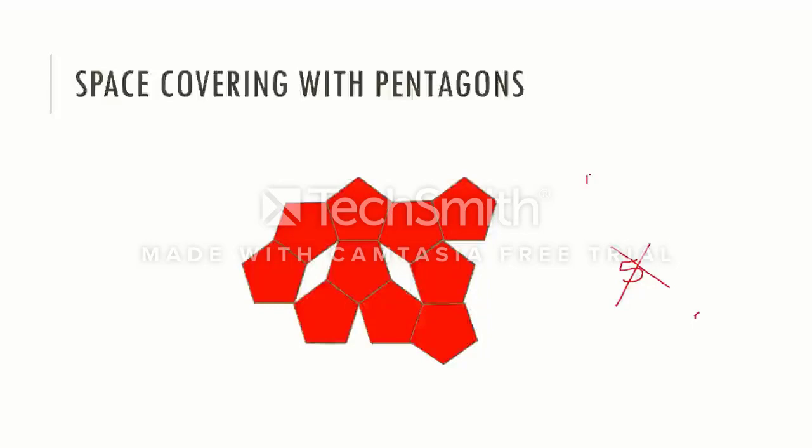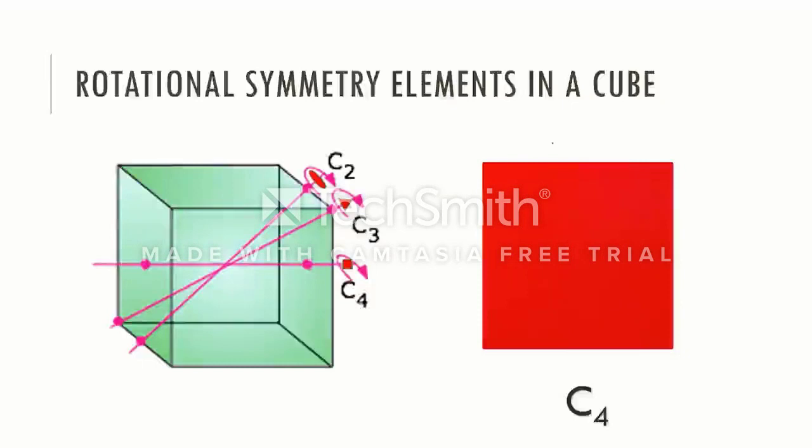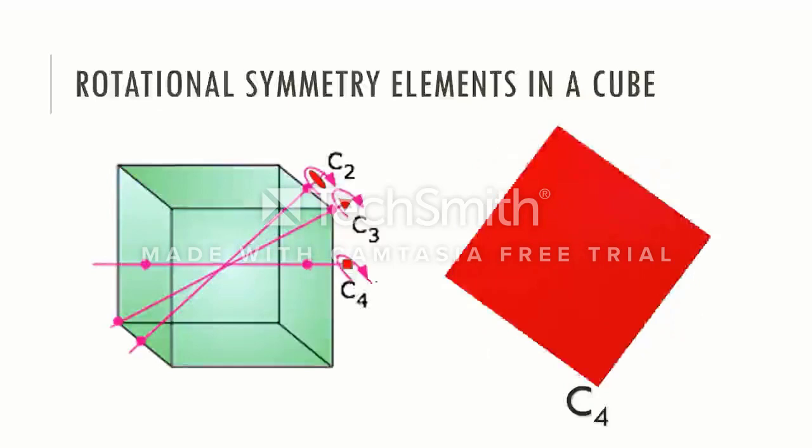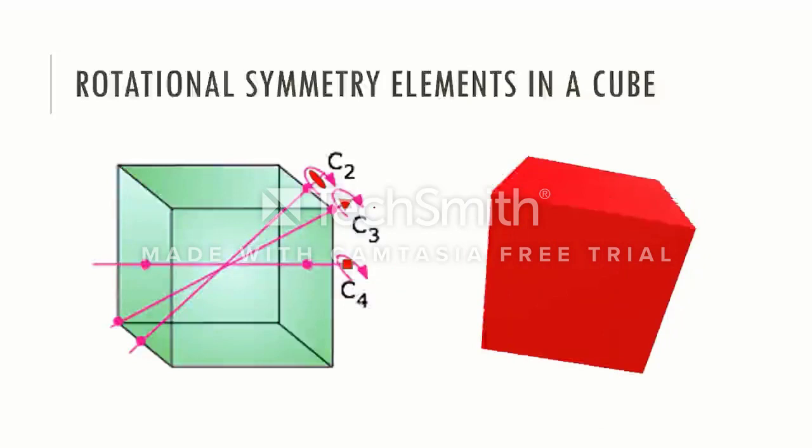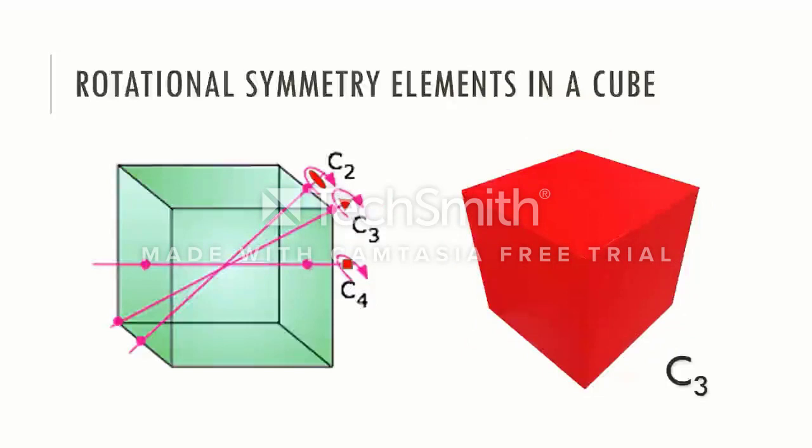Can you identify the symmetry elements present in this cube? Think for a while. A cube has three four-fold axes of rotation. Additionally, it has four three-fold axes of rotation and six two-fold axes of rotation.